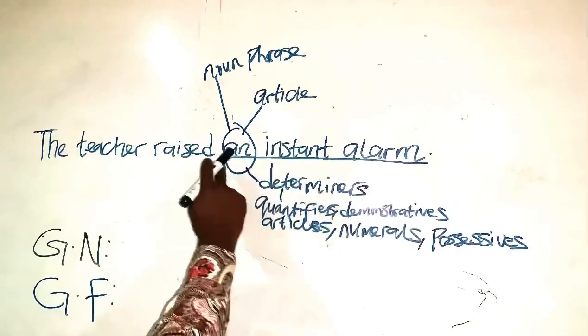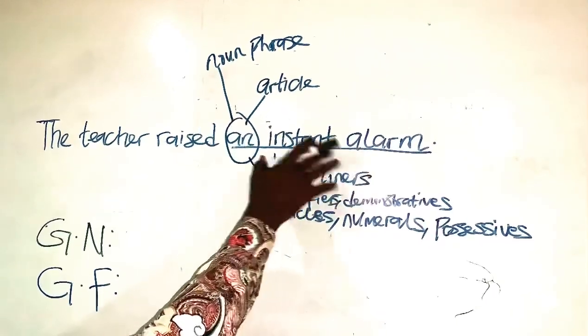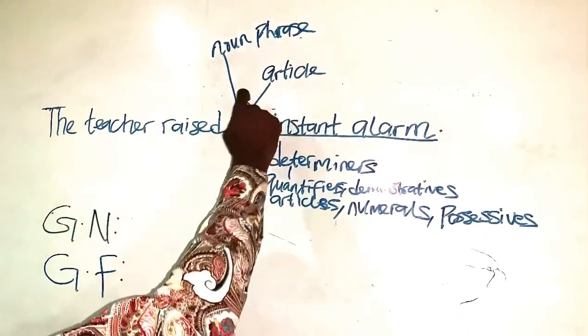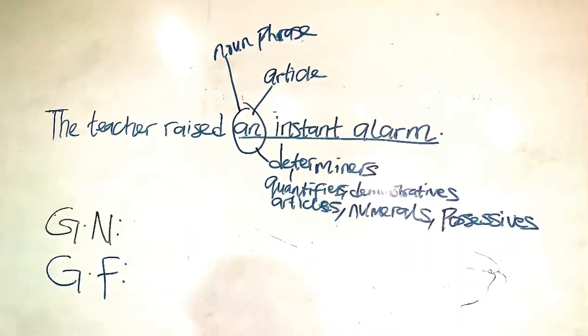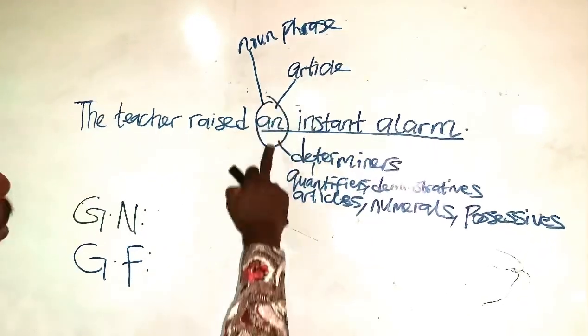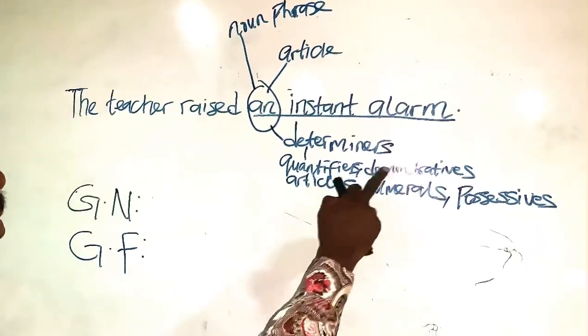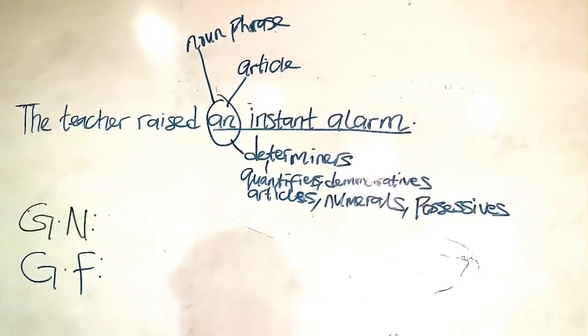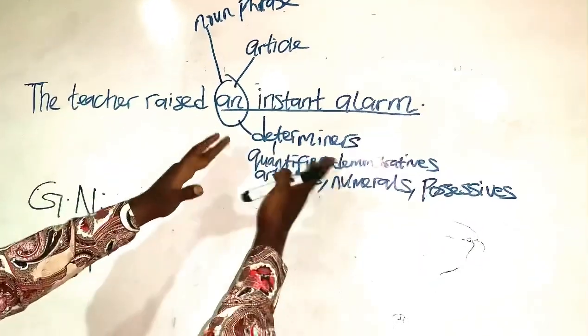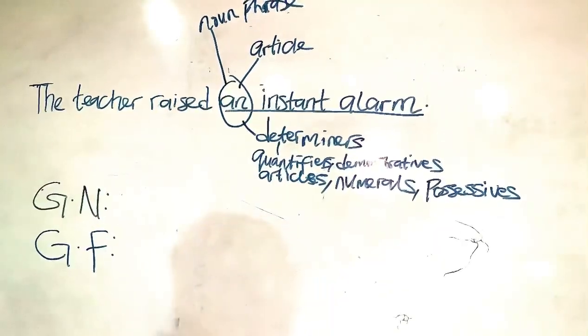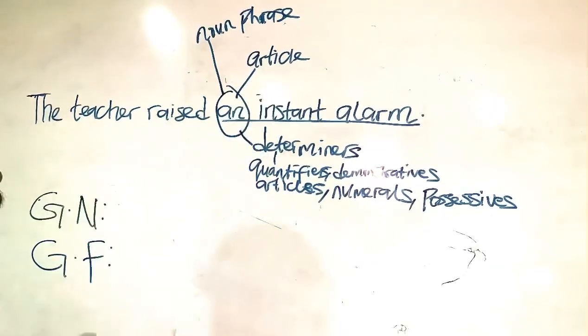The first thing we look at is that the expression starts with 'an.' An is an article which falls under determinants. All the determinants in English apart from articles are quantifiers, demonstrators, numerals, and possessives. Once an expression starts with any of these, it automatically tells you it's a noun phrase. That's one of the easiest ways to identify a noun phrase.